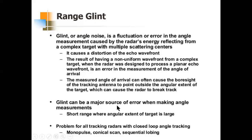Glint is hence a major source of error in angle measurements. Complex targets at short range will have more pronounced effects of glint. This problem affects all tracking radars with closed-loop angle tracking — such as monopulse tracking, conical scan, and frequency scan — all three of which we have covered. Now let us look specifically at range glint.